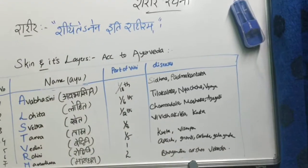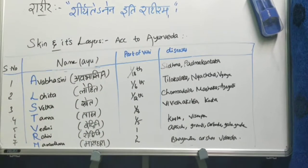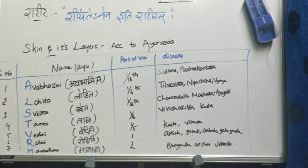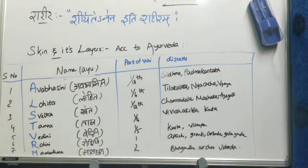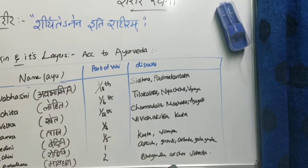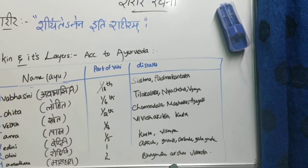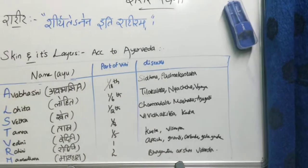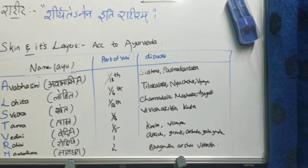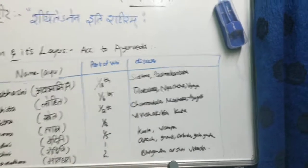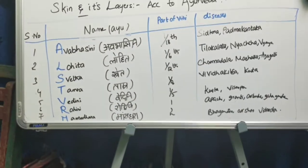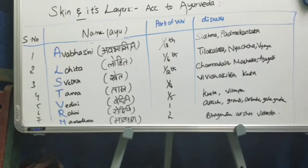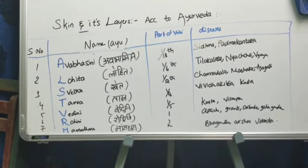Skin and its layers according to Ayurveda. There are seven layers of skin as per Ayurveda and as per modern also. The seven layers are: Avabhasini, Lohita, Shweta, Tamra, Vedini, Rohini, and Mansadara.